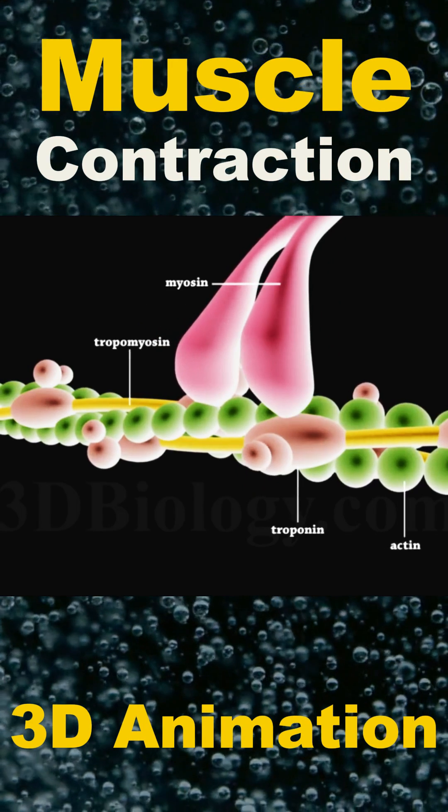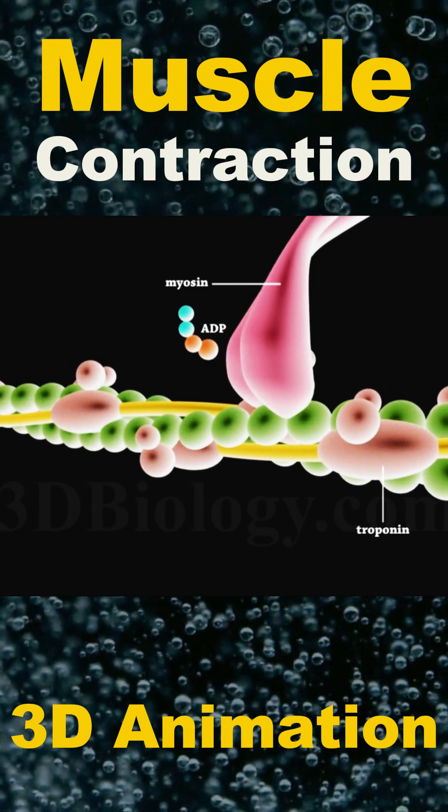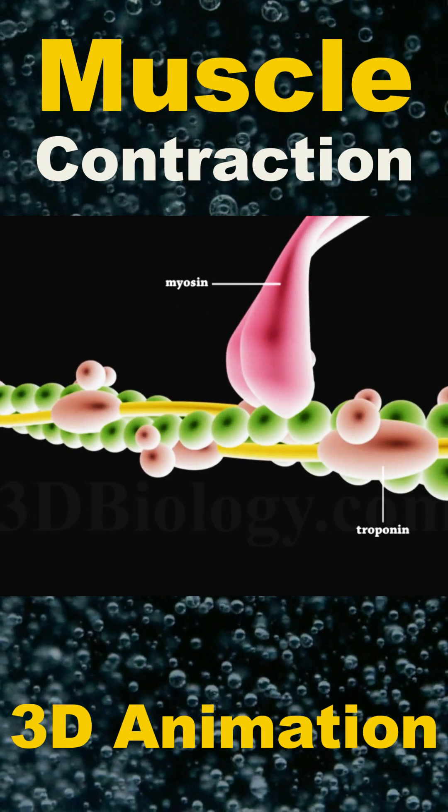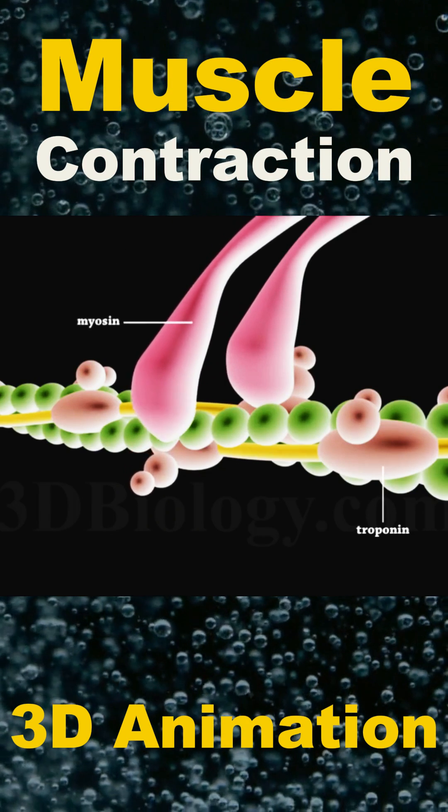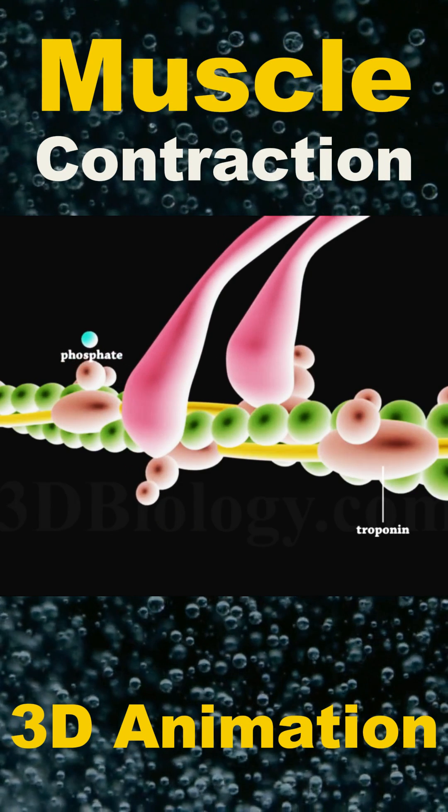When a myosin head binds ATP, it attaches to actin, repositioning itself. Phosphate release triggers a power stroke, propelling the actin filament. The ADP dissociates and the cycle repeats.